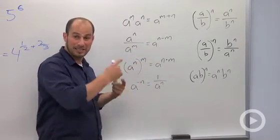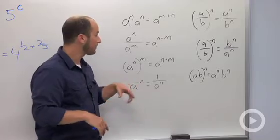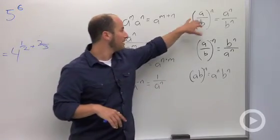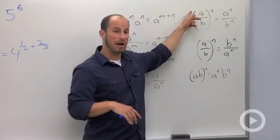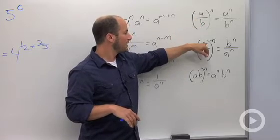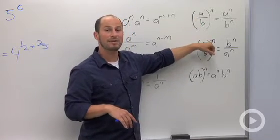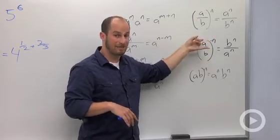A negative exponent basically flips it over into the denominator. A fraction to a power, that power gets distributed in. A fraction to a negative power, power gets distributed in and the negative sign flips our fraction.